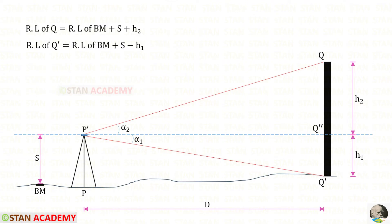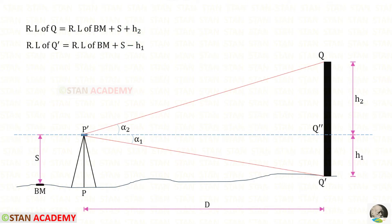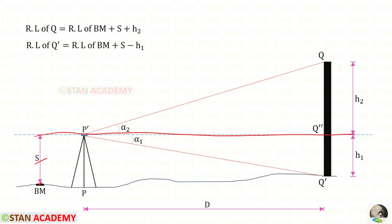To find the reduced level at the top of the tower (q), we add the reduced level at the benchmark, the staff reading s, and h2. To find the reduced level at the bottom (q dash), we add the reduced level at the benchmark and the staff reading, then subtract h1, since we are going downwards.